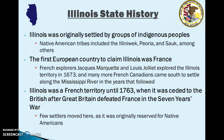After Great Britain had taken it from France, there were not very many British settlers who would move here, because an act of the British king at this time was to reserve the land gained from France for the Native Americans who were already living there. So Illinois was still largely unsettled leading up to the American Revolution.